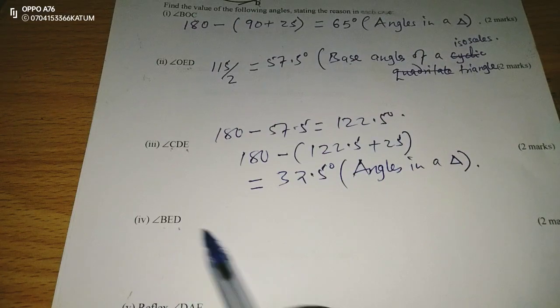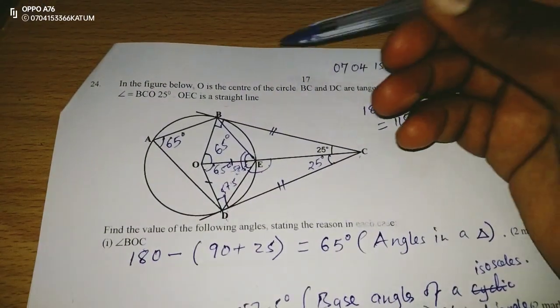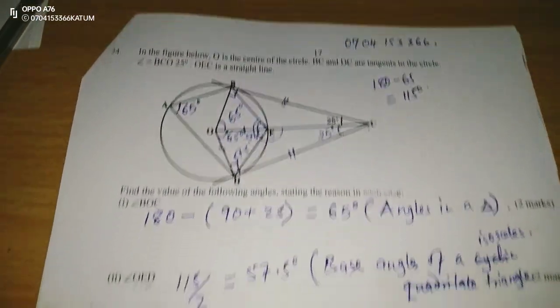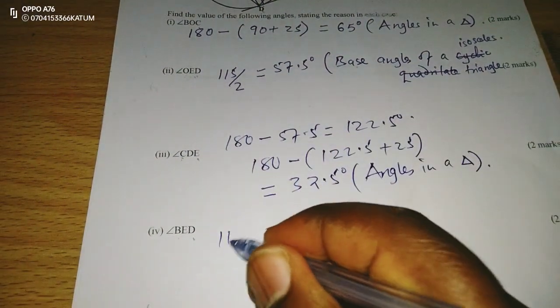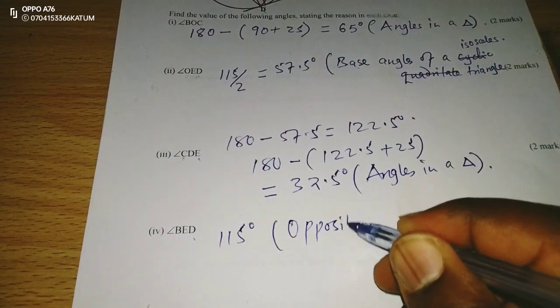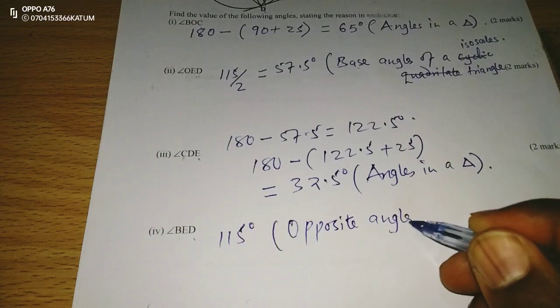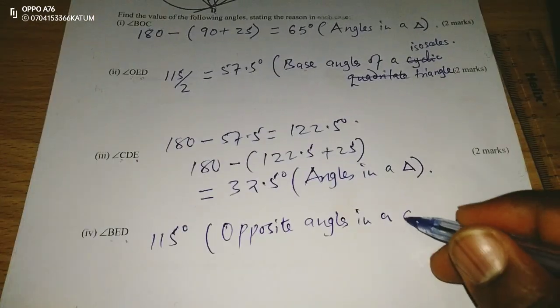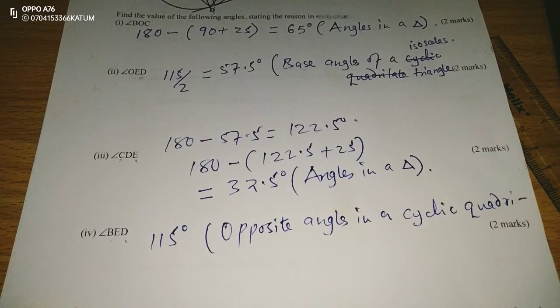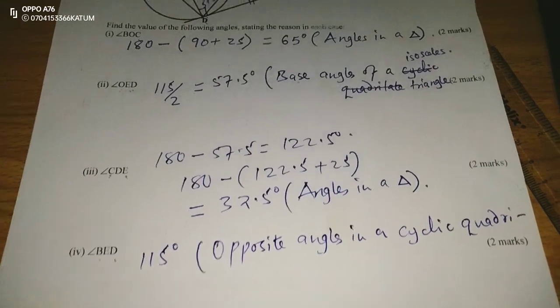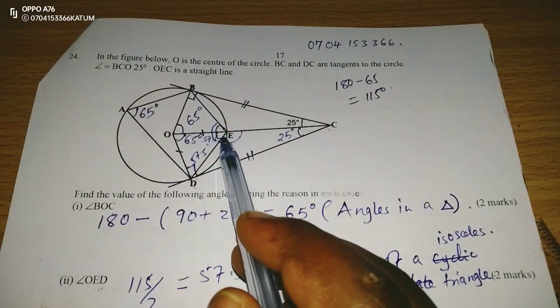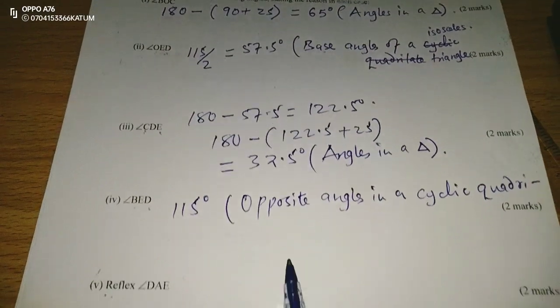Angle BED. That is the angle we found as 115. Reason being opposite angles in a cyclic quadrilateral. The angles should give us 180, and we are already having 65 on the opposite side. So the angle opposite here should be 115 so that they may give us 180.